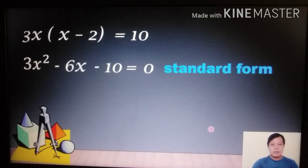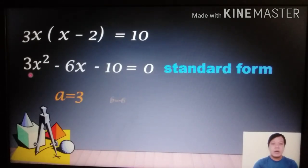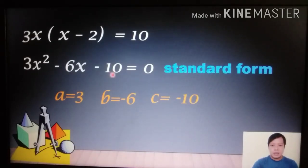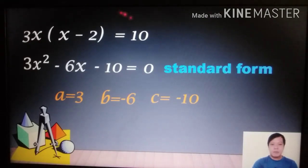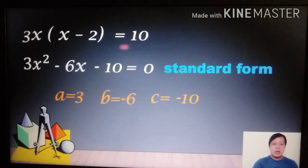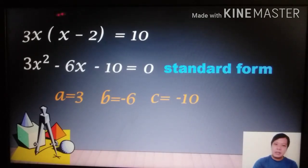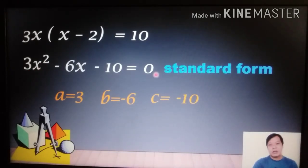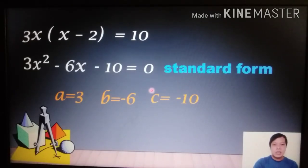In this standard form, a = 3, b = −6 (the coefficient of x), and c = −10 (the constant term). Even though the original equation had no visible squared term, simplifying revealed 3x², confirming it is a quadratic equation now written in standard form.